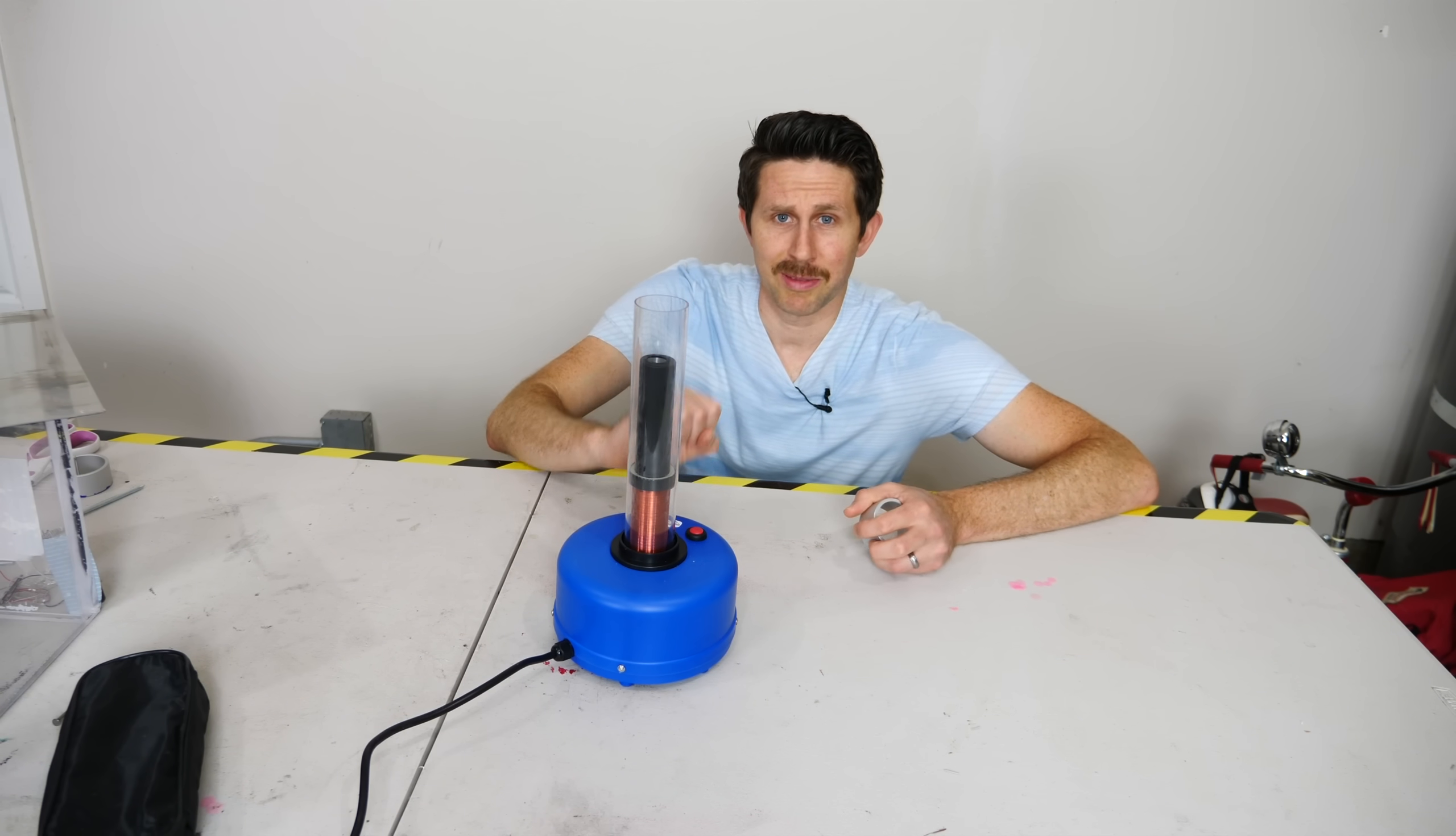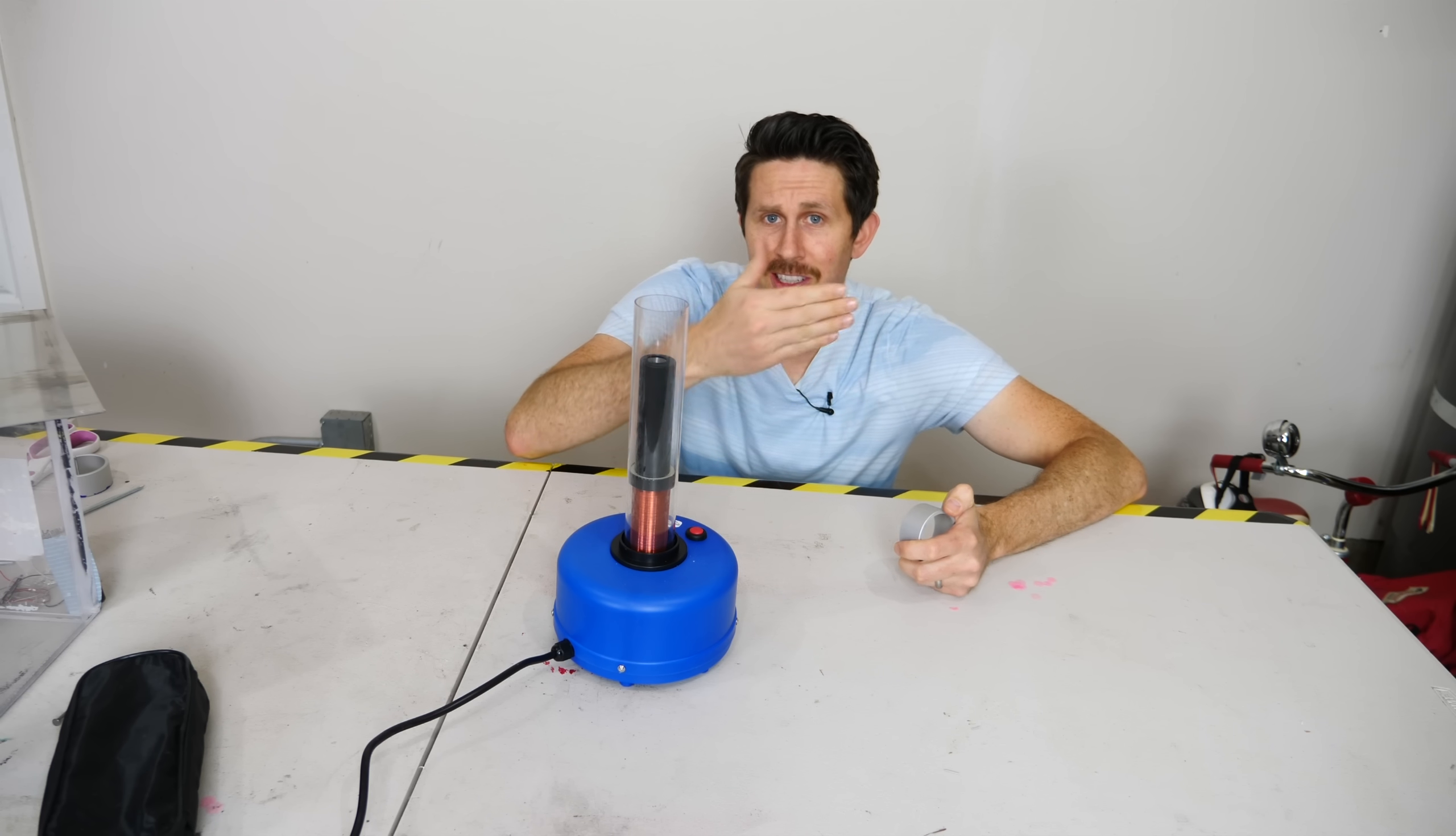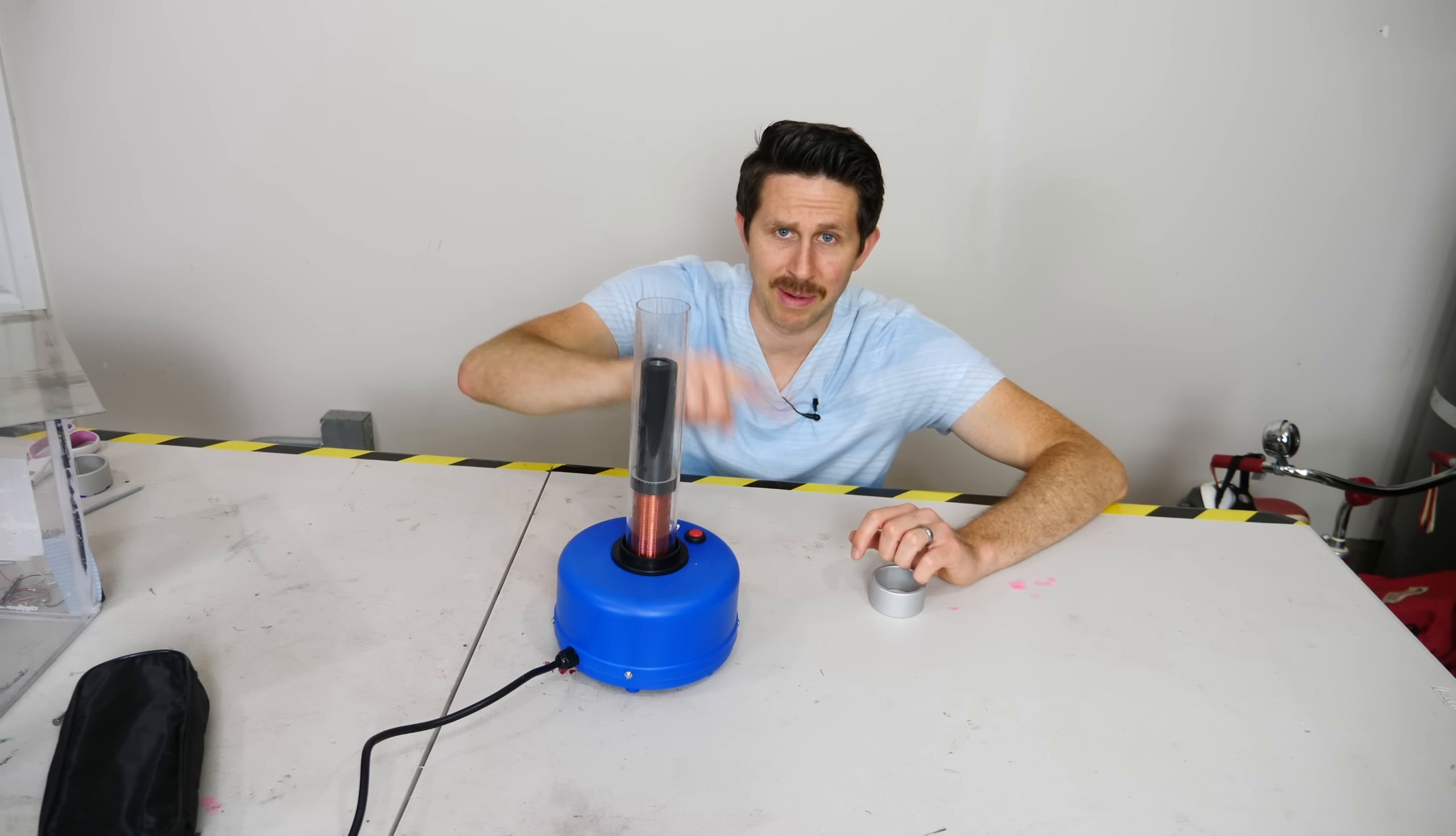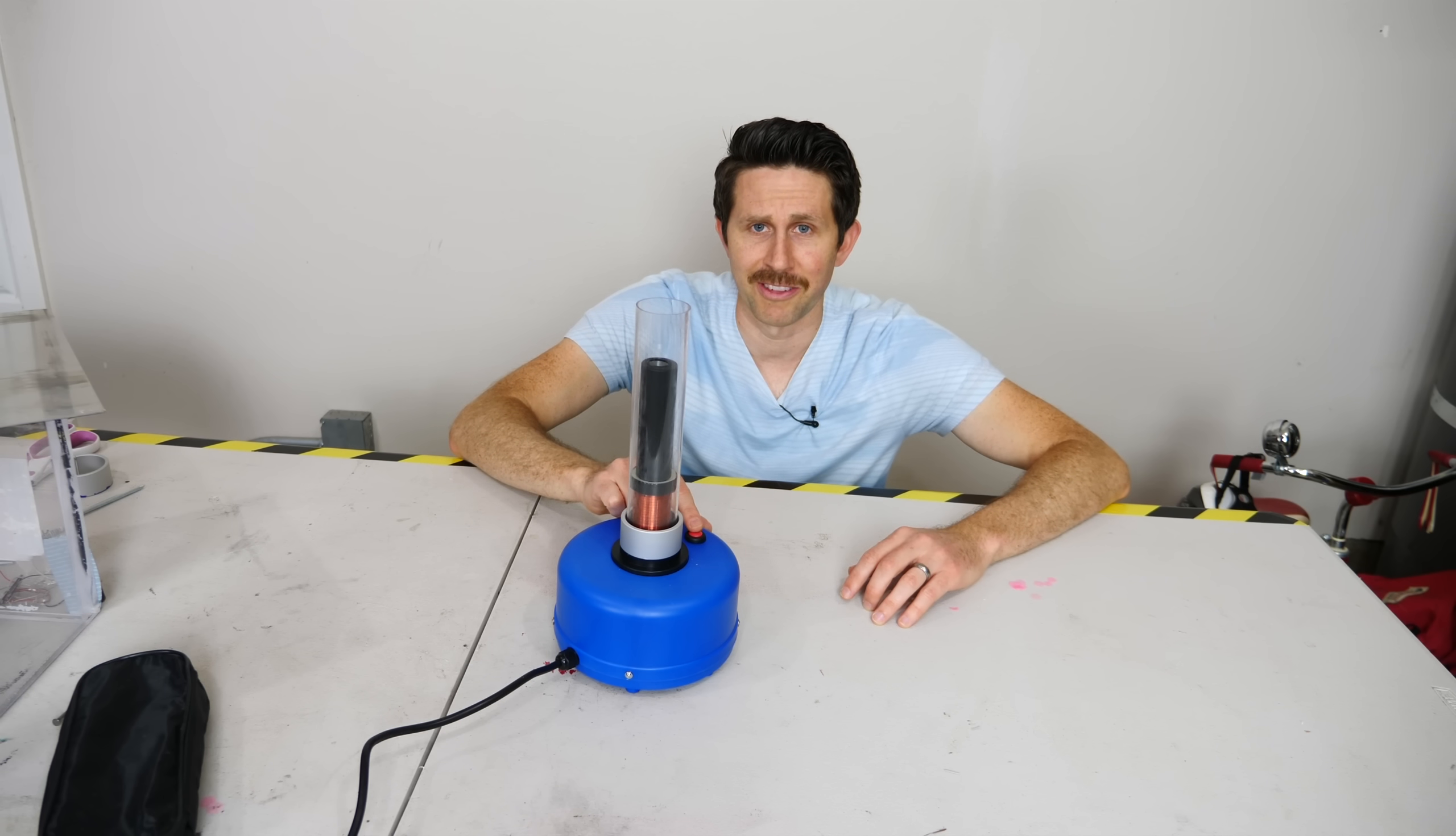And so what happens when you have a changing magnetic field near a piece of metal, that piece of metal will oppose the magnetic field that induced the current that made the magnetic field in the first place. And so what I have here is just a coil of wire wrapped around an iron core, and this is connected to my AC voltage, and so it's creating a changing magnetic field because the electrons are going back and forth and back and forth 60 times per second. So now watch what happens when I stick a piece of metal by this changing magnetic field.